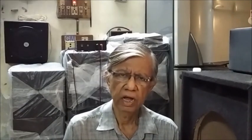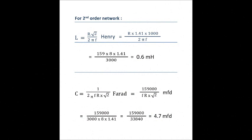Now for example, let us calculate the values of L and C for a crossover frequency at 3000 Hertz and speaker impedance of 8 ohms. From calculations, we find the value of L to be 0.6 milliHenry and the value of C is 4.7 microFarad.